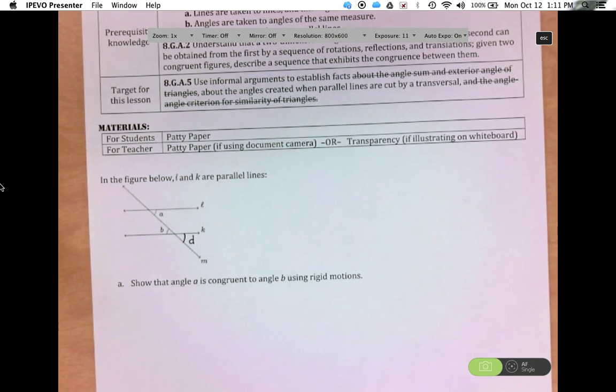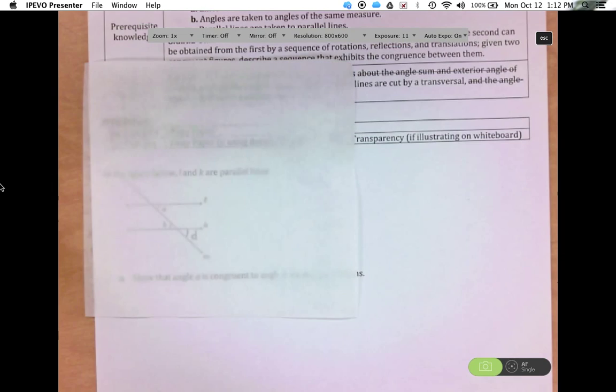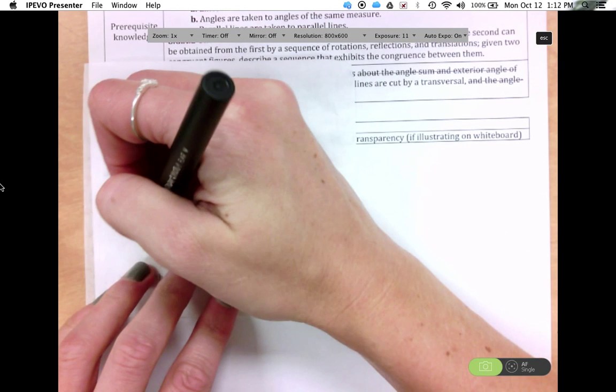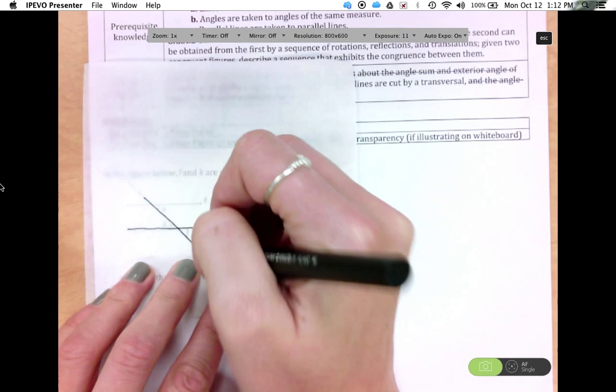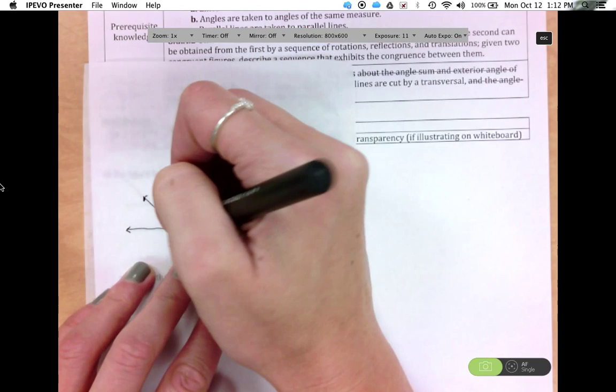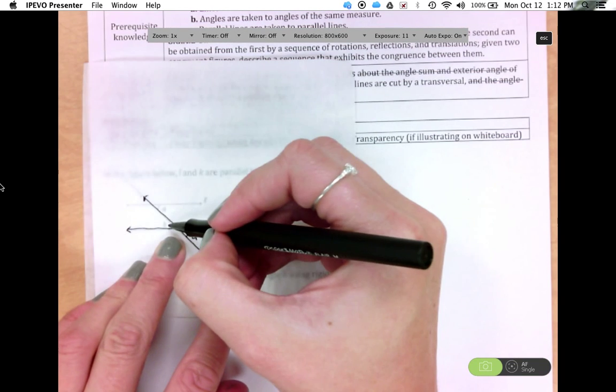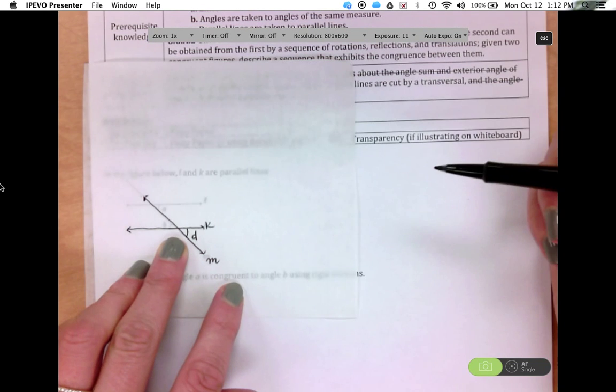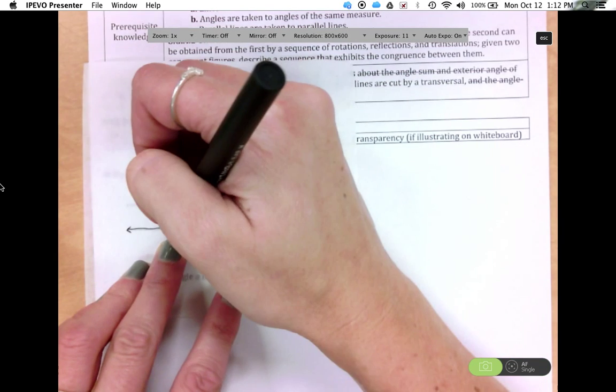So then the next thing we need to show is then that we know that D is congruent to B. And so that can be done by a rotation. So you can then trace your line K and your line M.